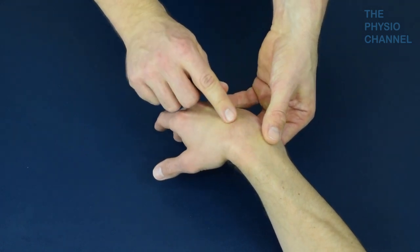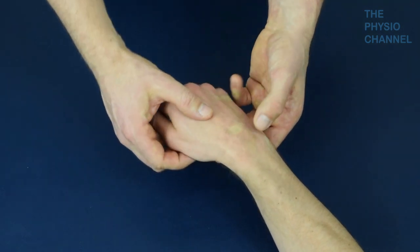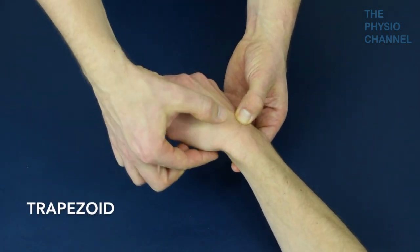Above the capitate is the lunate carpal bone. The trapezoid is located between the capitate and the trapezium here.